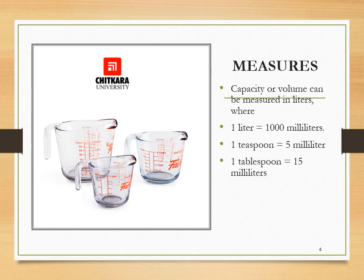Capacity or volume can be measured in liters. One liter is equal to 1000 milliliters. One teaspoon is 5 milliliters and one tablespoon is 15 milliliters. These are the quantities used for liquid ingredients in your recipe — these parameters are generally used when working with liquids.